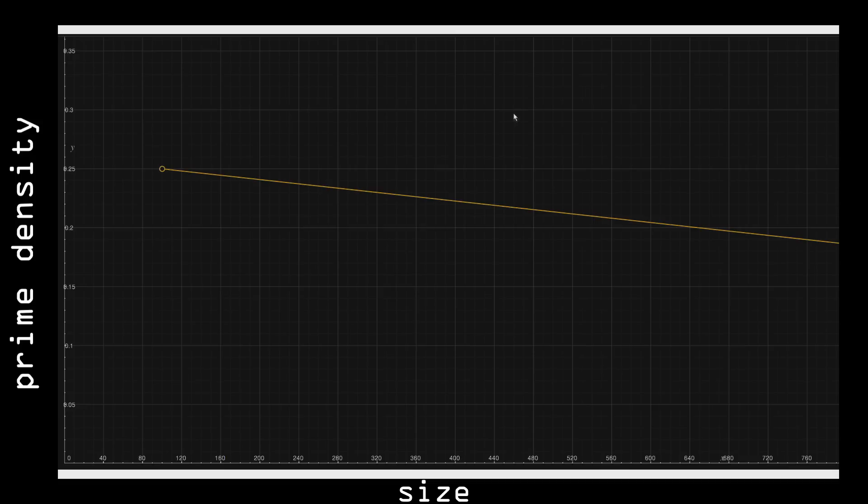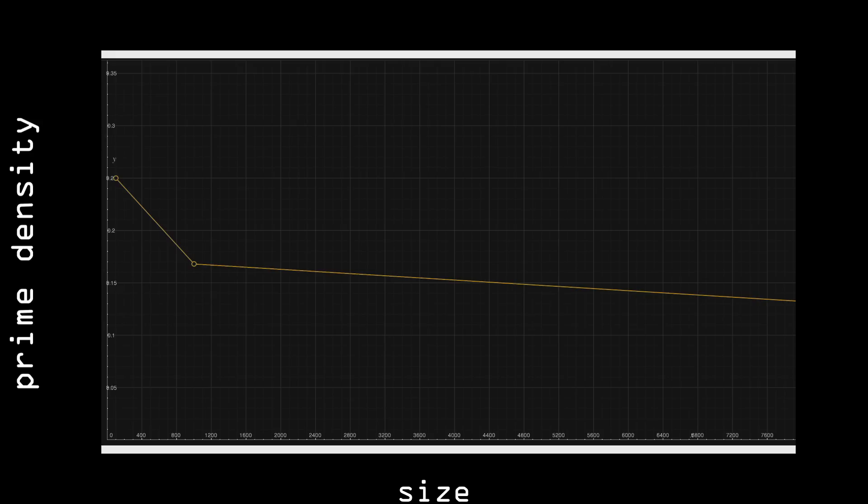Here is a graph of the search size on the horizontal axis and the prime density on the vertical. Notice that as we zoom out the primes are a vanishing proportion of all integers.